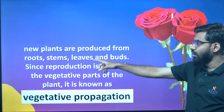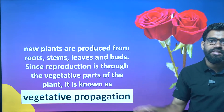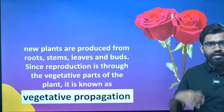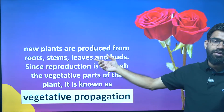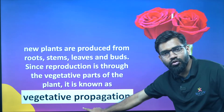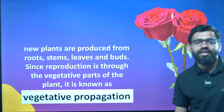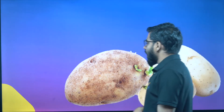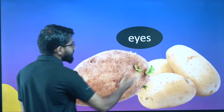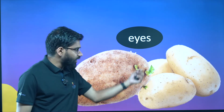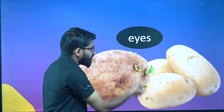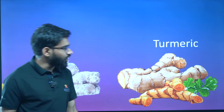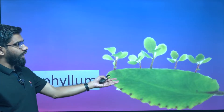Vegetative parts are called root, stem, leaf, and buds. That is the whole plant. Examples of vegetative propagation include potatoes, ginger, and turmeric.